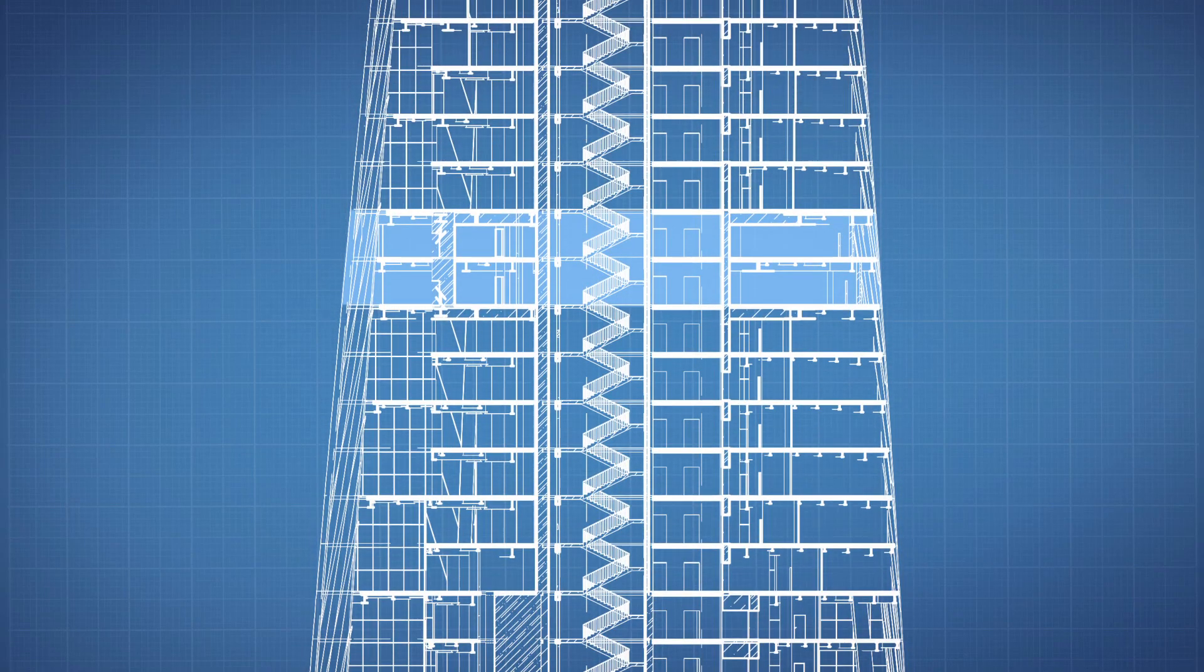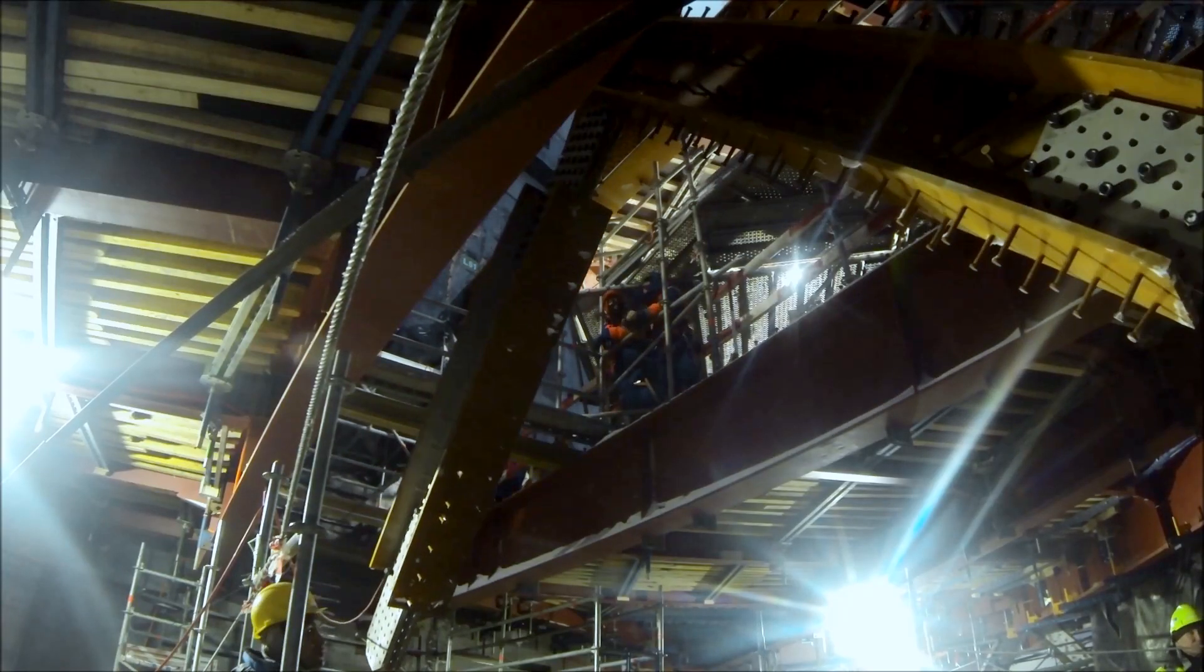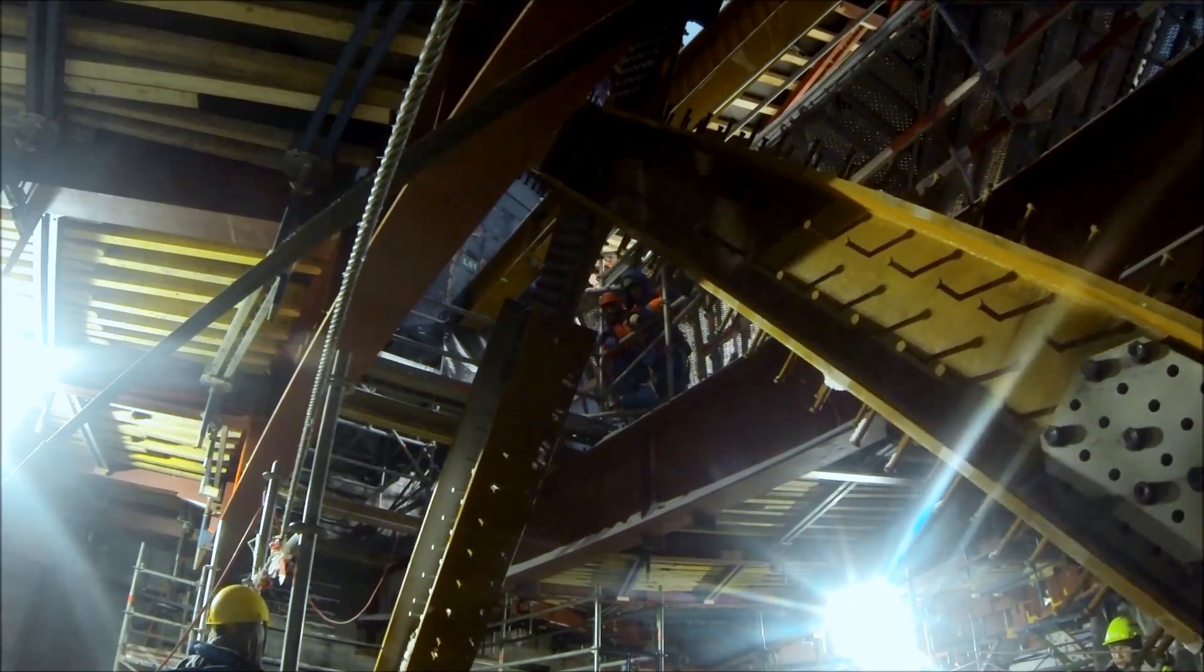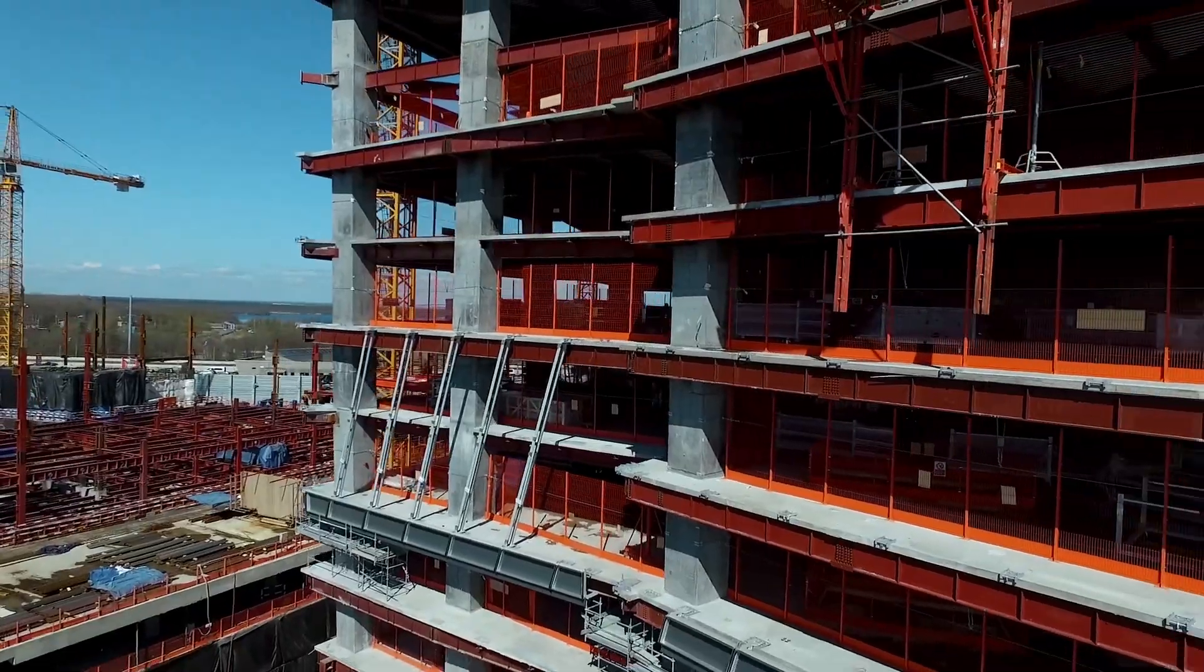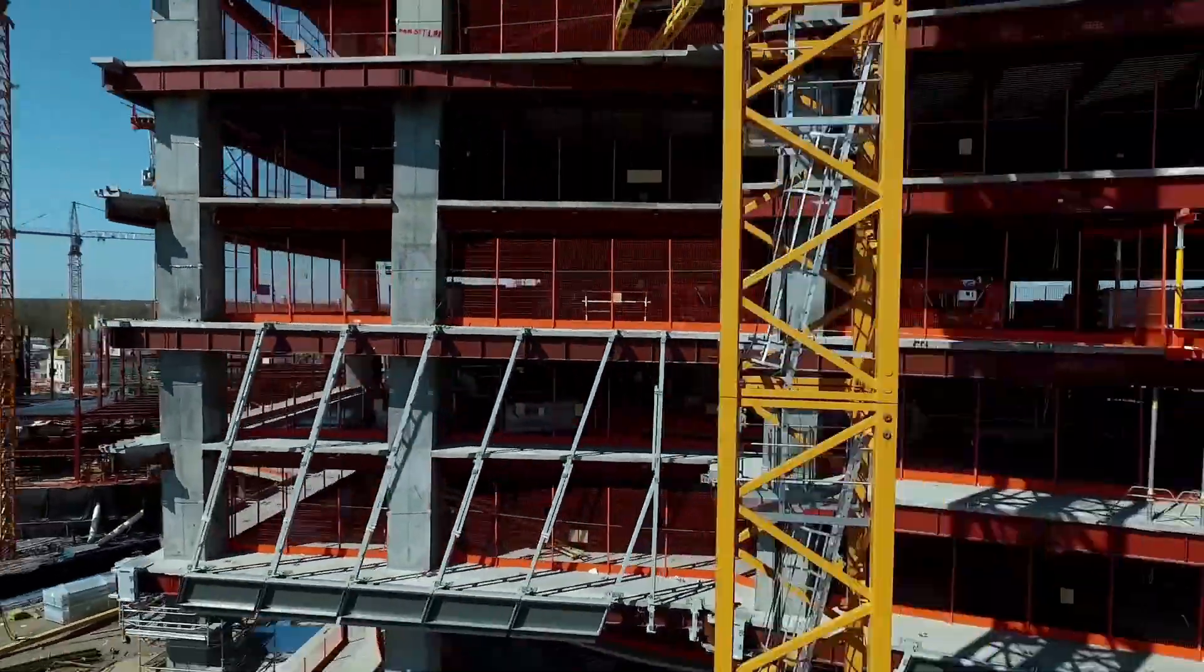Inside each outrigger, the core of the tower is connected to the composite columns by reinforced slabs and steel reinforced trusses. We have 10 radial walls made of steel and concrete.